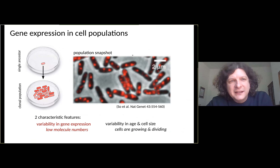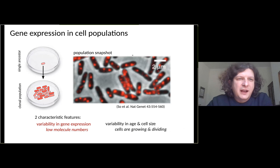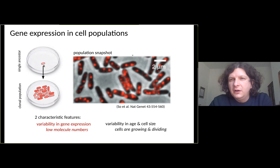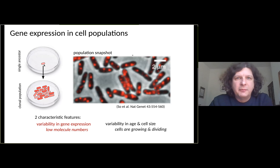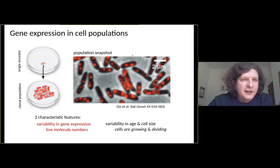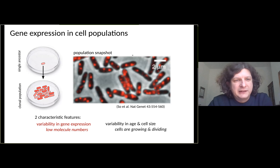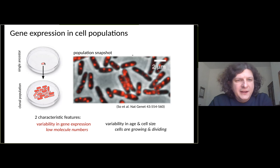The basic setup we consider is where we have an isogenic cell population - think of a petri dish where you start with a single bacterium and then let these cells grow and divide until you end up with a clonal population like the one shown here.